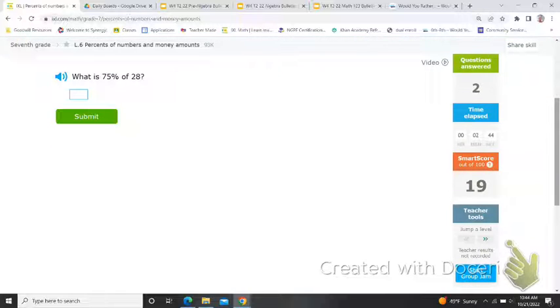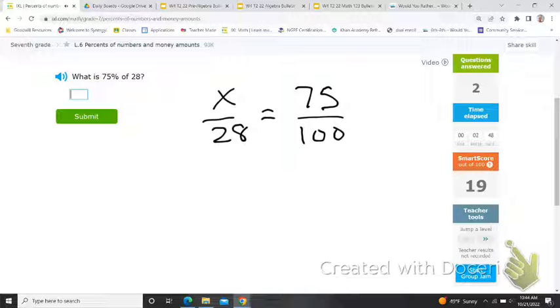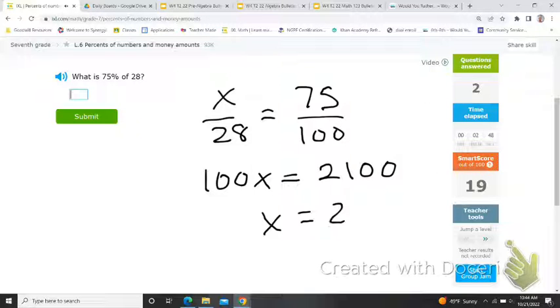So 75% of 28, 75 over 100. Now 75% is the same as 3 fourths, and if you know that, you may be able to more quickly come up with that the answer is 21. If you're thinking, oh my, where in the world did you get 21? Well, you are certainly welcome to still cross-multiply and then divide, and you still get 21.